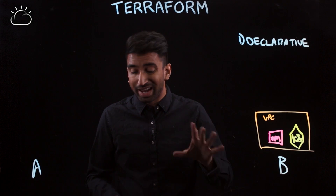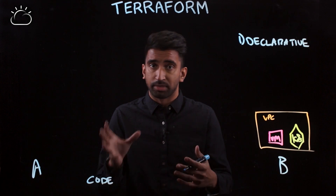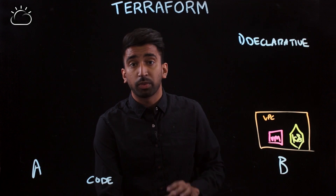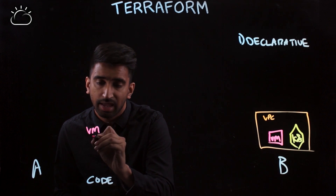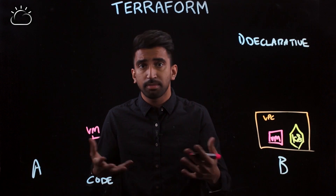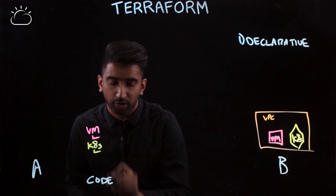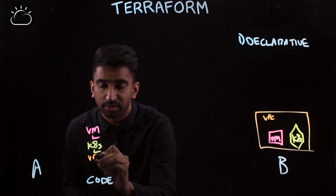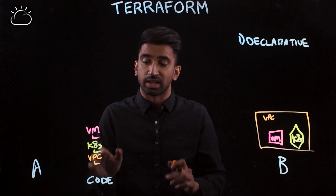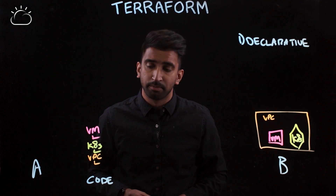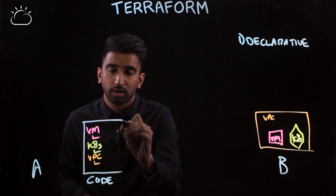The first phase is that you actually have to create the Terraform file — you write or code up that Terraform file. In this Terraform file, we're going to have three major resources: the VM with a set of arguments to support that, things like the name, networking, and data center. We'll have the Kubernetes cluster with a set of arguments for that. And finally we've got the VPC, which will refer to some of the network settings of the VM and the Kubernetes cluster and has arguments to support that. That's your coding phase — you've got a Terraform TF file with these things defined.